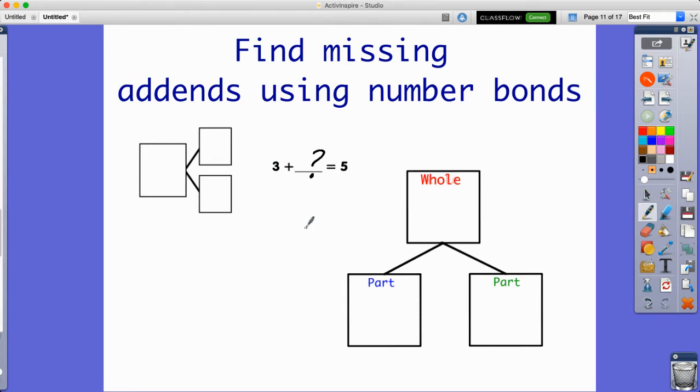What do we have in our math sentence? Right here we have a 5. We have equals 5, so 5 is going to be our sum, and then these are going to be our addends.